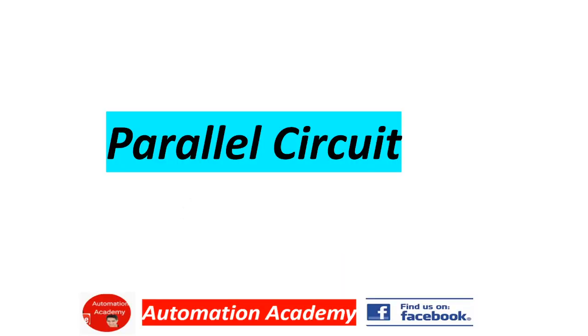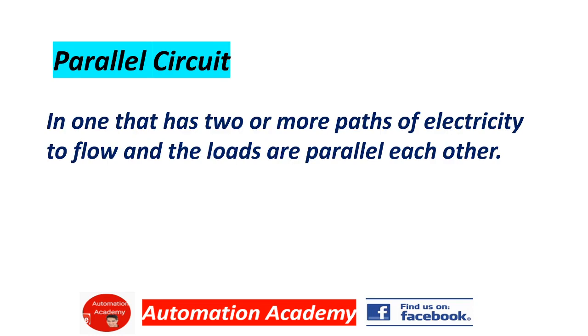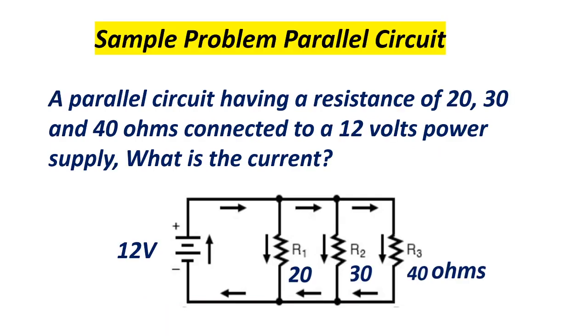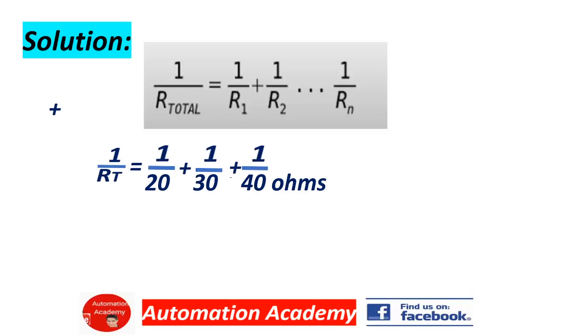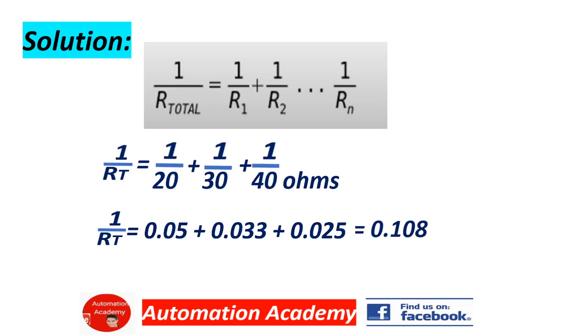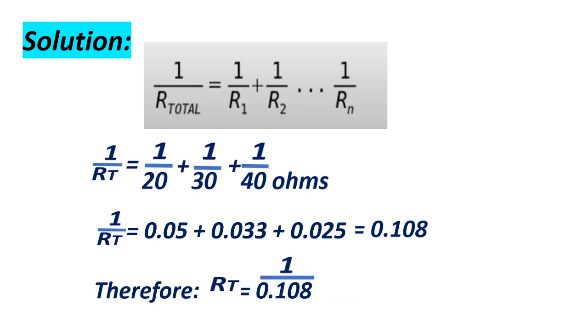Our next topic is parallel circuit. A parallel circuit is one that has two or more paths for electricity to flow, and the loads are parallel to each other. We have a sample problem here for parallel circuit: A parallel circuit having a resistance of 20, 30, and 40 ohms connected to a 12 volt power supply. What is the current? The formula for parallel resistance is: 1/RT = 1/R1 + 1/R2 and so on. Then we substitute the value of resistance: 1/RT = 1/20 + 1/30 + 1/40. And the answer is 1.08.